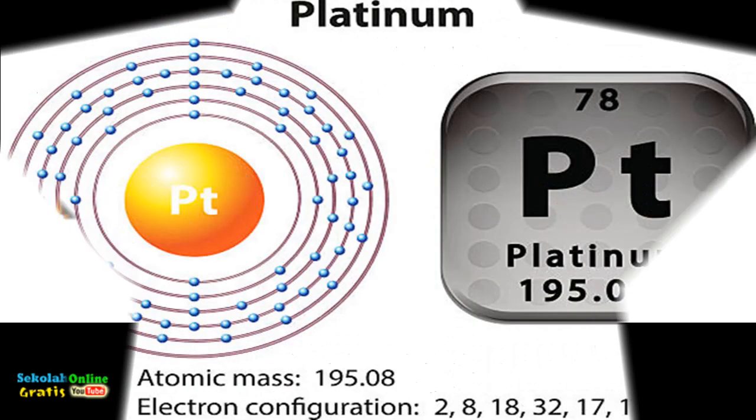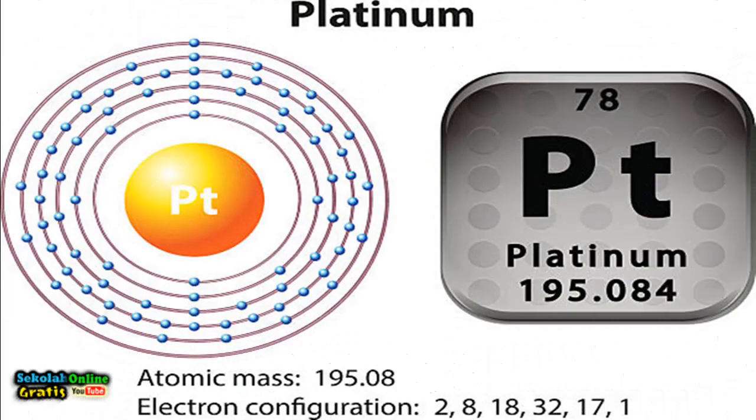For example platinum Pt has the atomic number 78. What is its electron configuration? Electron configuration of platinum: 2, 8, 18 and so on. In the fourth shell the maximum number of electrons is 2 times 4 to the power of 2 equals 2 times 16 equals 32. So the electron configuration of platinum equals 2, 8, 18, 32, 18.